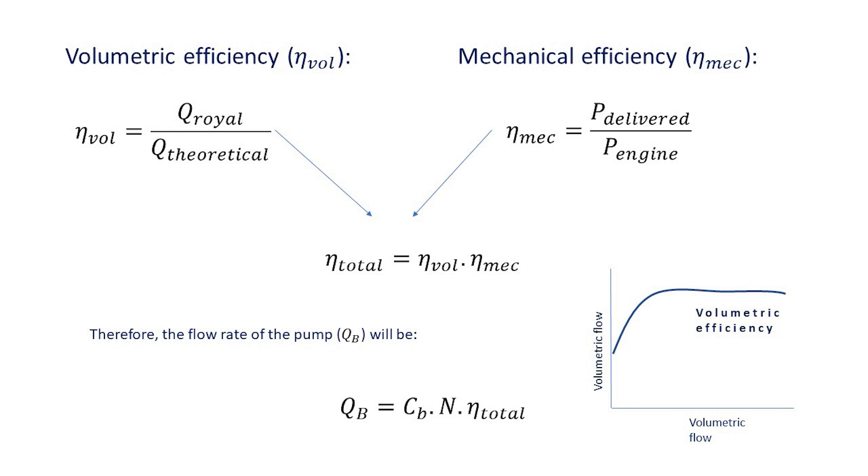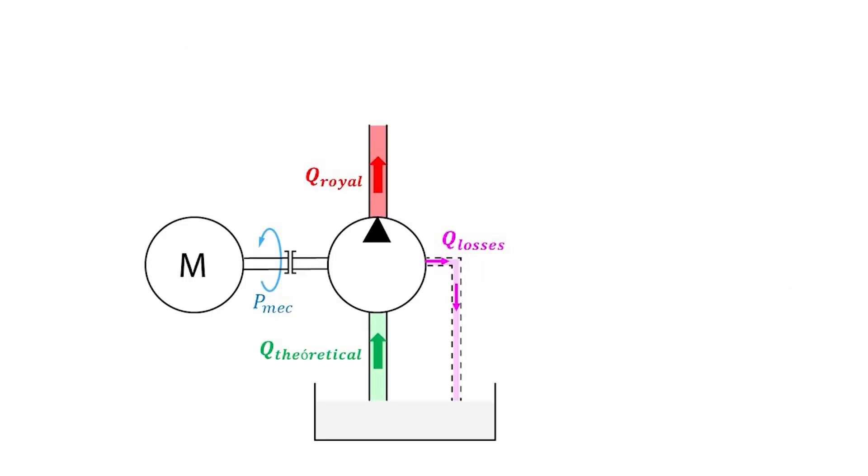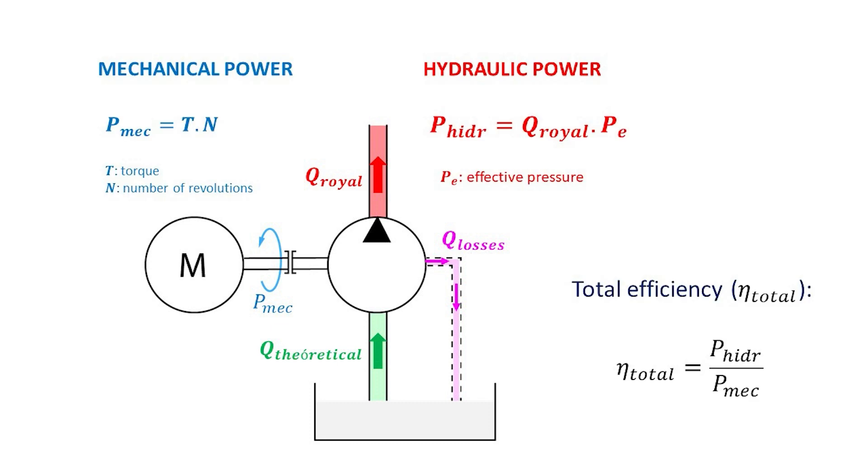The total efficiency can also be obtained in another way. Let's see this example. Assuming that we have the motor coupled to the hydraulic pump, it can be assumed that the theoretical volumetric flow is the one entering the pump, and the effective volumetric flow is the one used by the system. Volumetric flow loss must also be considered. Remember that the volumetric flow is the flow.